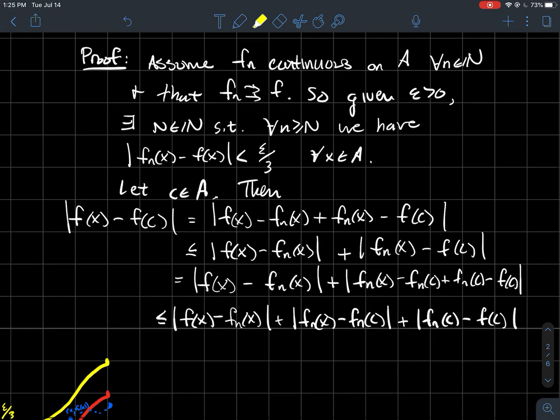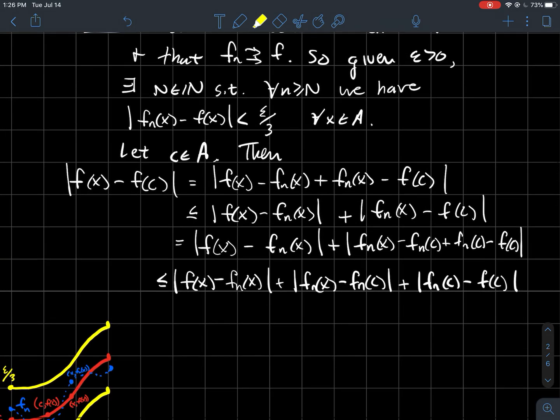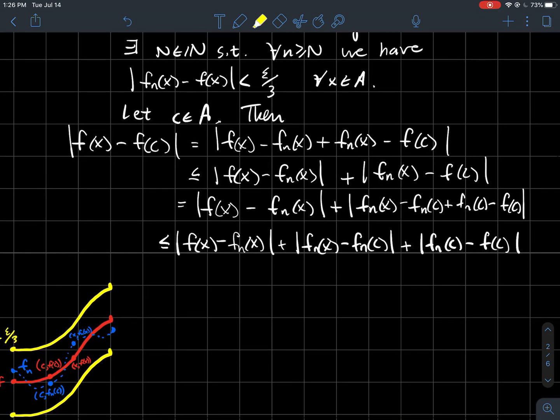And now what I'll do is I'll start using some of the facts that I know. So what are some of the facts that I know here? Well, I know that I have made sure that I've got some N such that once I get past it, this can be made less than epsilon over three. And what else do I know? Same idea here.